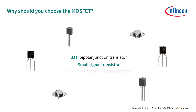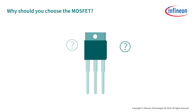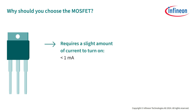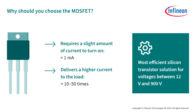There are many different types of transistors in the market, so why should you choose the MOSFET? The main advantage is that the MOSFET only requires a slight amount of current to turn on — less than 1mA. This means the turn-on efficiency is much higher than other switches, and the MOSFET can deliver a much higher current to the load when compared to other transistors, 10 to 50 times higher or even more. The MOSFET is the most efficient silicon transistor solution on the market for voltages between 12V and 900V.